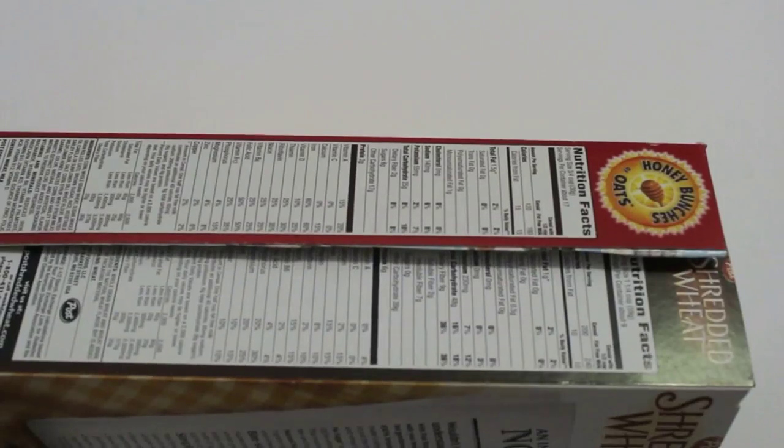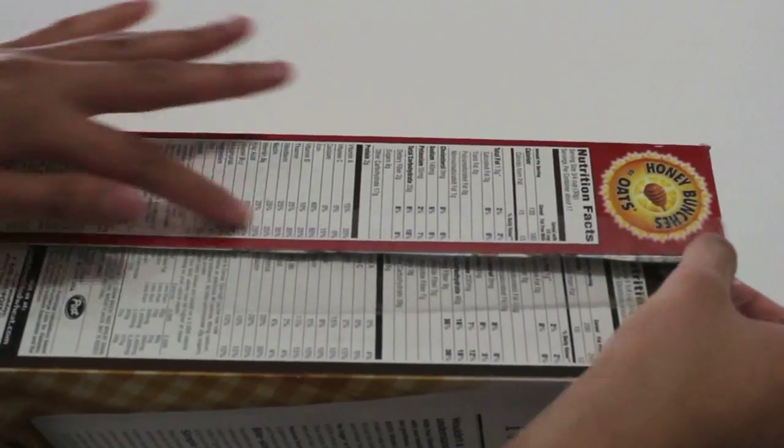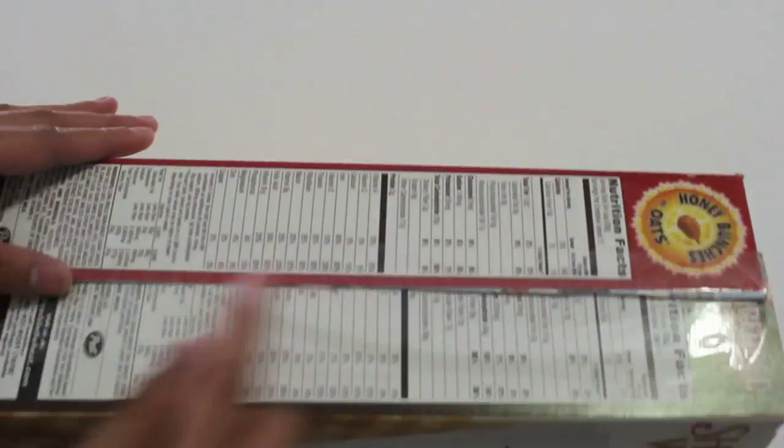Put the exposed sides of each box facing each other and connect them with a piece of tape. Flip the boxes over and tape the other side too.